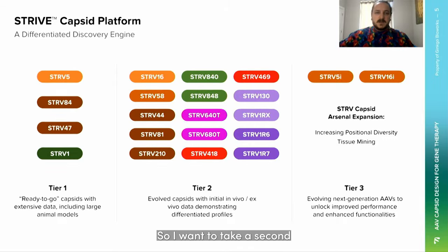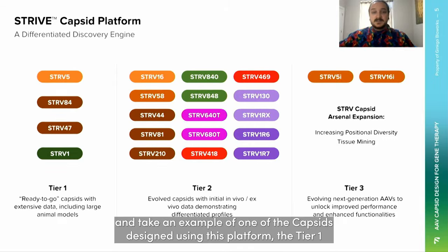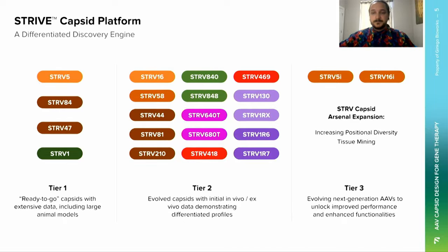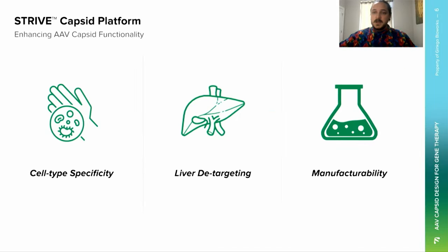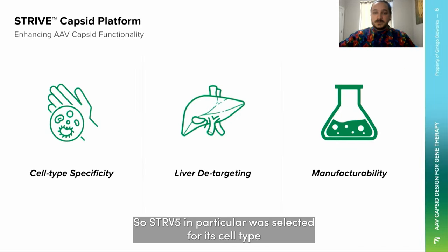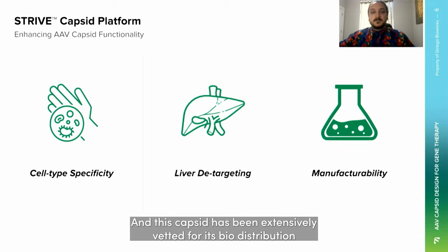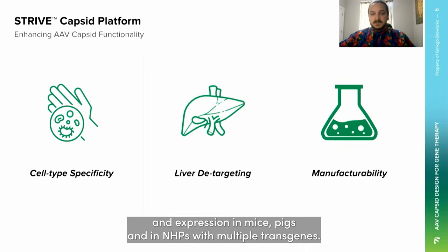I want to take a second and discuss one of the capsids designed using this platform — the Tier 1 capsid Strive 5 — and its unique characteristics. Strive 5 was selected for its cell type specificity, liver detargeting character, and manufacturability. This capsid has been extensively vetted for its biodistribution and expression in mice, pigs, and NHPs with multiple transgenes.